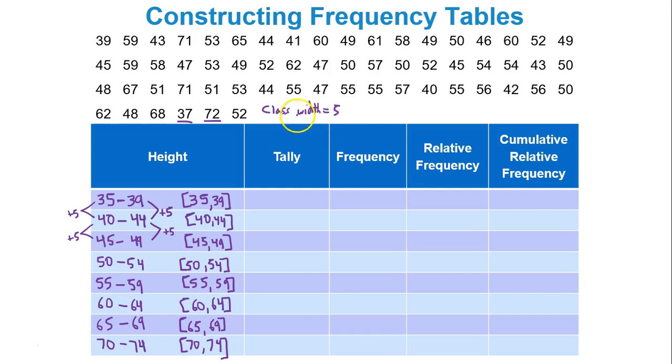So what about the rest of the table? My recommendation is to look at each of your data values. 39 for instance, cross it out and put a tally mark in the class where 39 belongs. 59, cross it out. Put a tally mark in the class where 59 belongs. At the end of the day, after you go through all 60 data values, you'll end up with two tally marks in class 1, which is a frequency of 2.